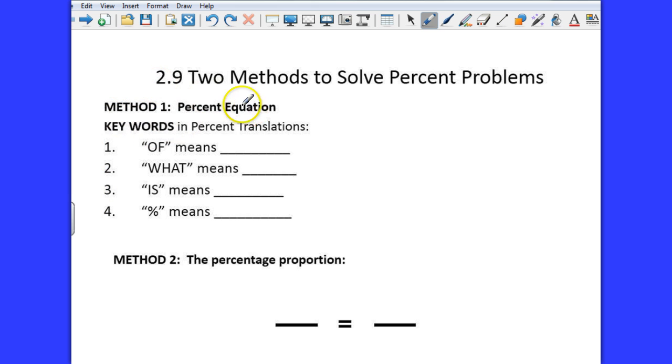The first method we're going to talk about is called the percent equation, or in other words, using an equation. The trick to this is to identify the key words in a sentence or in a particular scenario and translating those into math, a math equation. This is solving for the unknown. Here are the key words you need to know. The word 'of' in math usually means multiply. You see 'of', multiply. The word 'what', you see that in an equation or in a sentence, usually is the variable, it's the unknown, x, or whatever it is you're trying to solve for.